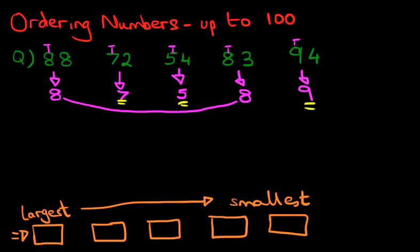And don't forget, we are trying to find the largest number first. So of these three numbers, the seven, the five, and the nine, which number is the largest? That's right. It is nine. So the number we have to write down here is 94. This is the largest number in these set of numbers.